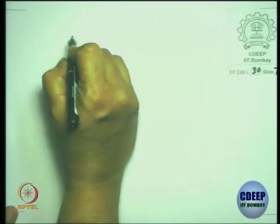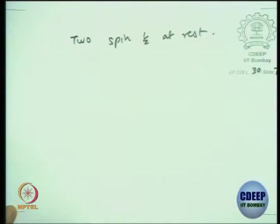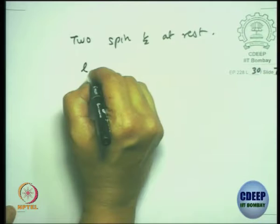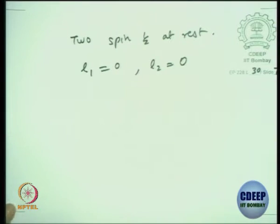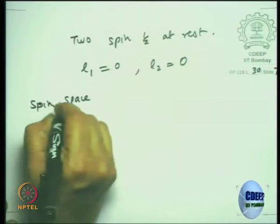So you can take two spin-half particles at rest. That means L for the first particle is 0, L2 for the second particle is 0. Adding a 0 to anything in angular momentum addition is nothing. So we can take the space as spin space now for such a particle.